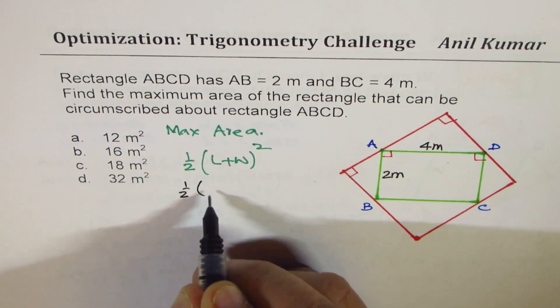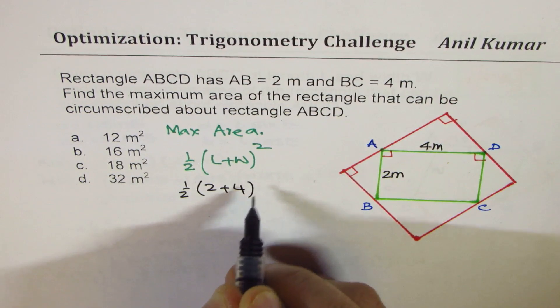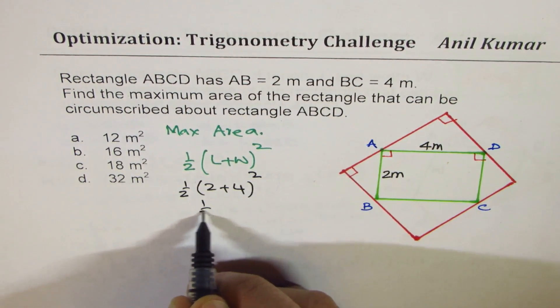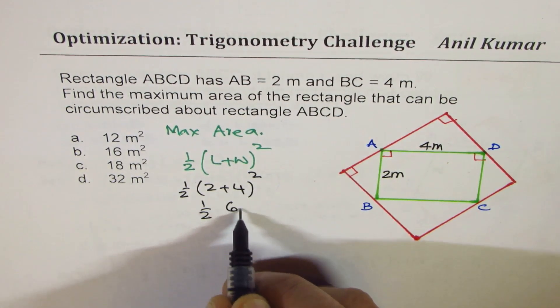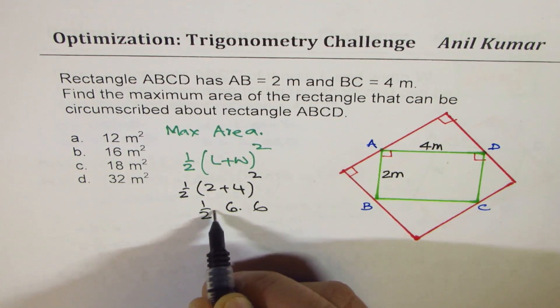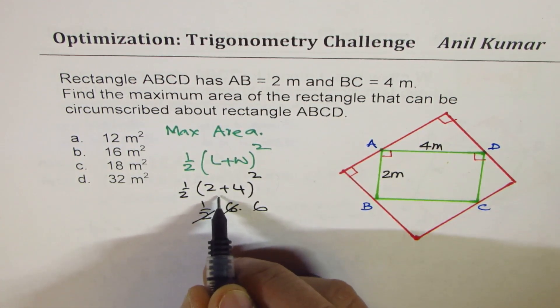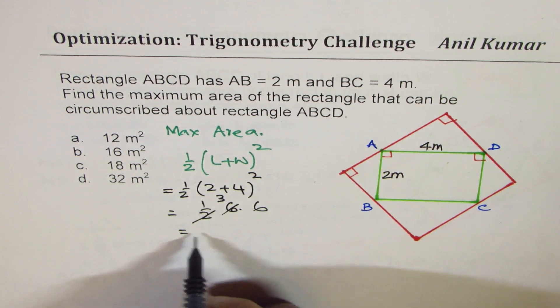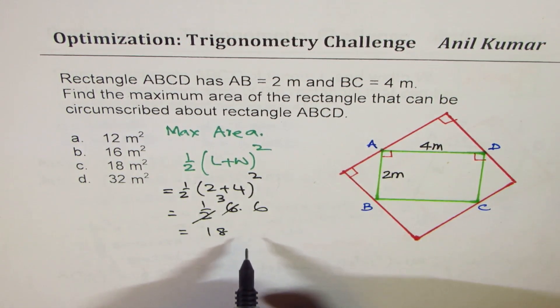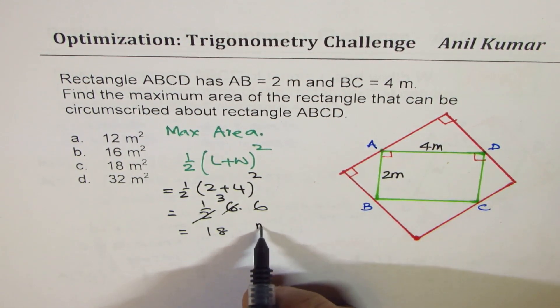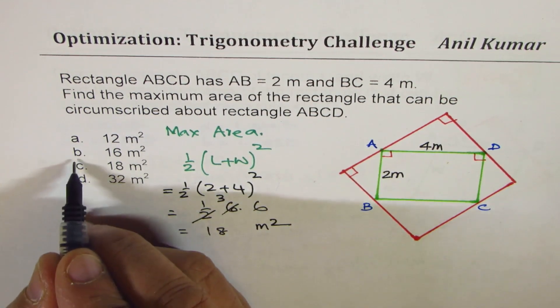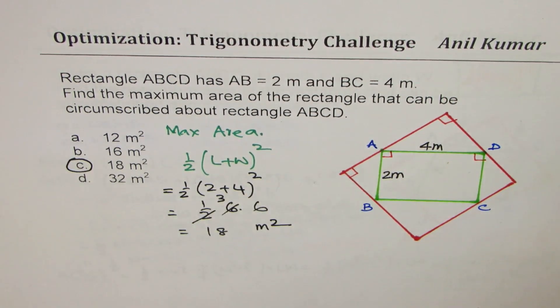Now, in this case, what is length? What we are given here is that the dimensions are 2 and 4. So it is half of 2 plus 4 whole square, which is half of 6 times 6. So you can simplify this. 6 goes 3 times. So we get 18 as the answer, right? Units are, of course, meters squared. So option C is the right option.